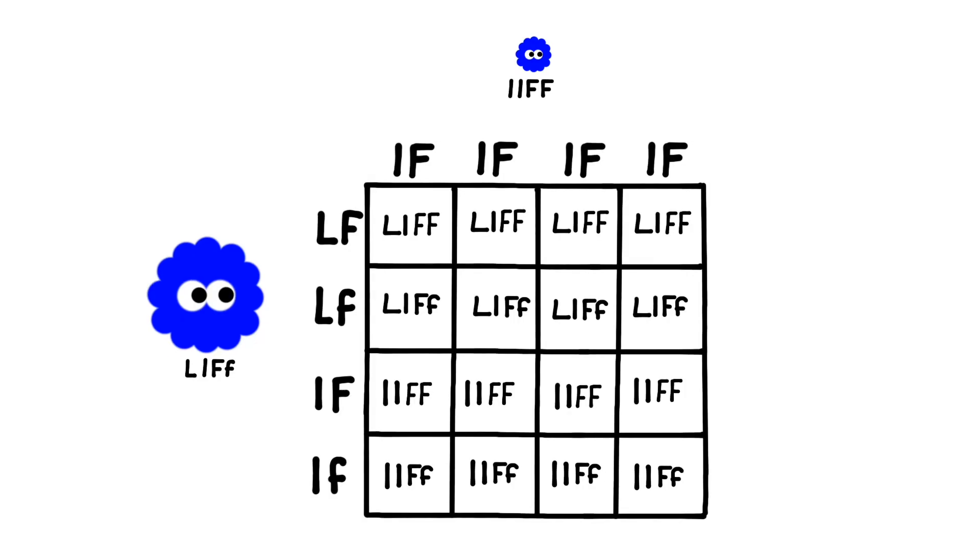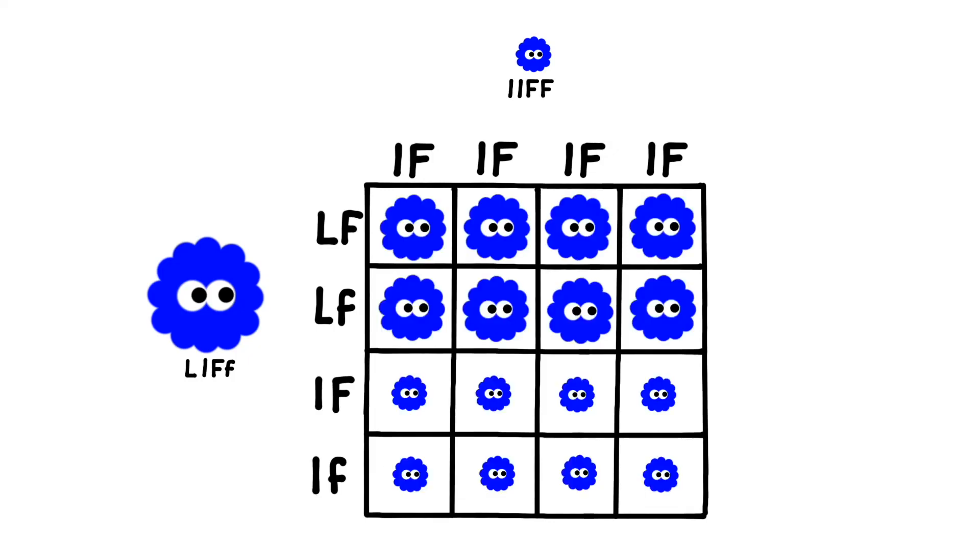Before you work out the phenotypes, see if you can take an educated guess as to the ratio of large to small and fluffy to smooth. Notice that we have a 50-50 split of large and small offspring, but that every single one of the offspring has the fluffy phenotype. Even though there are no smooth individuals in this generation, because some of the offspring are heterozygous for smoothness, they might be able to produce smooth offspring themselves.